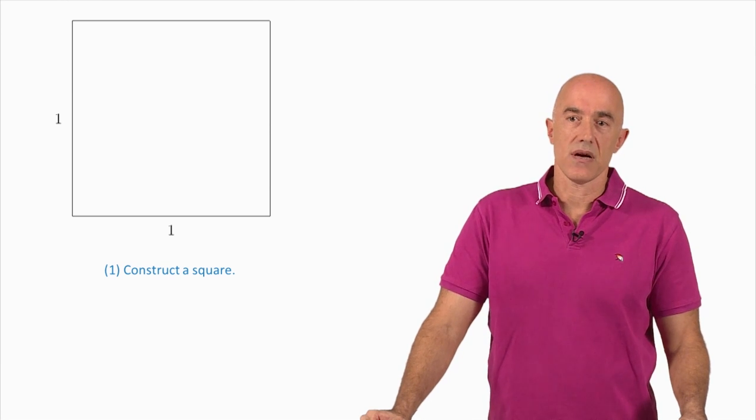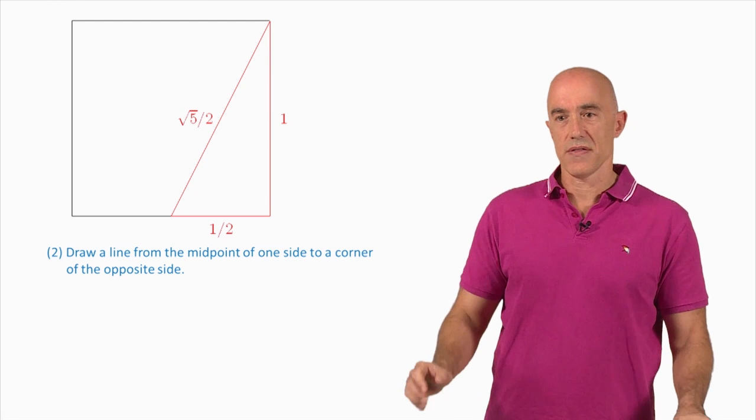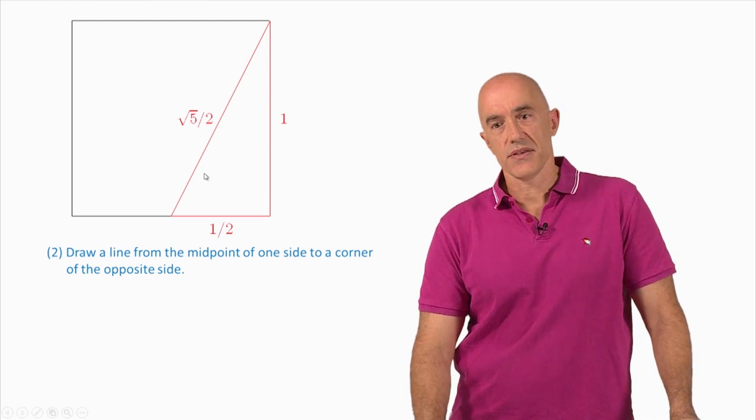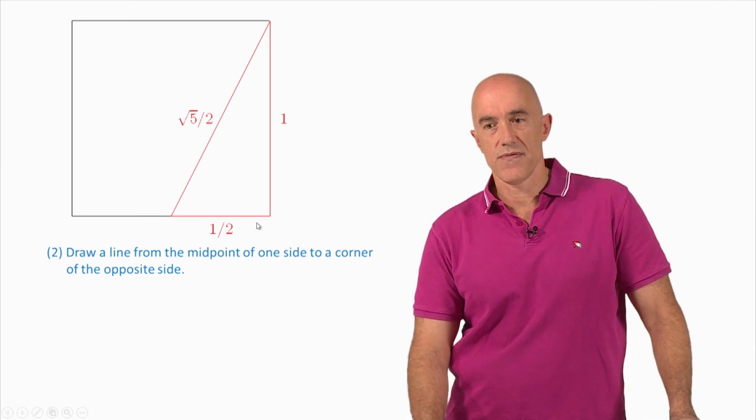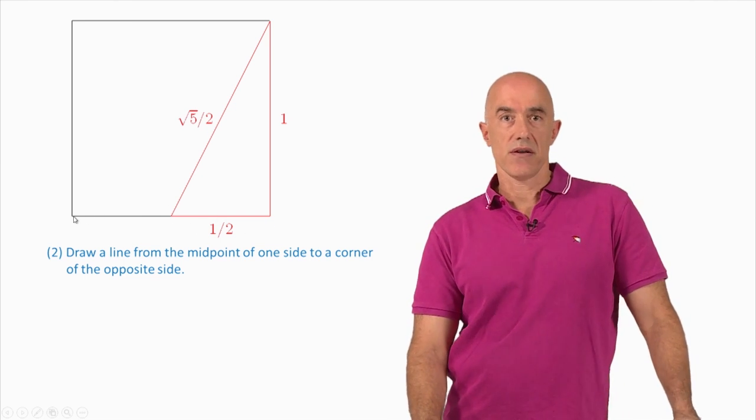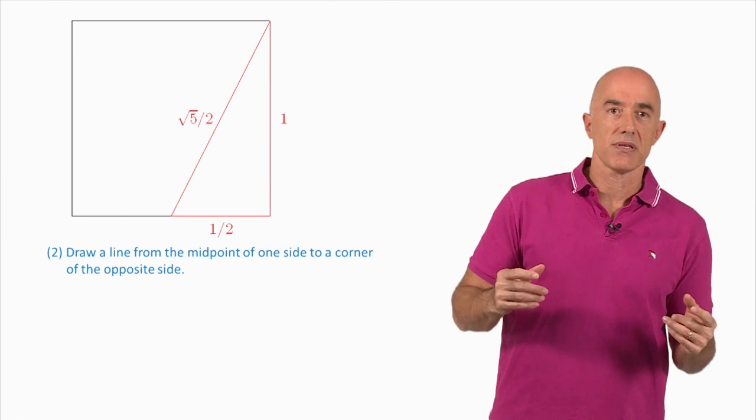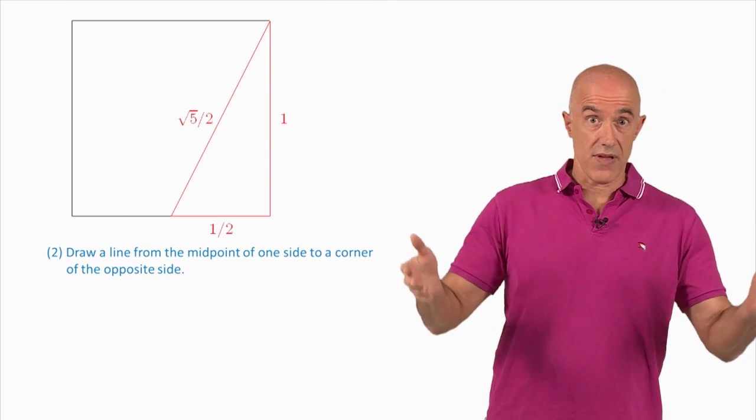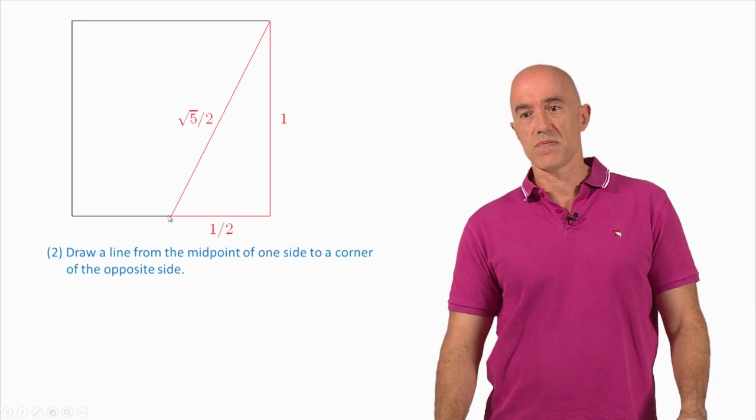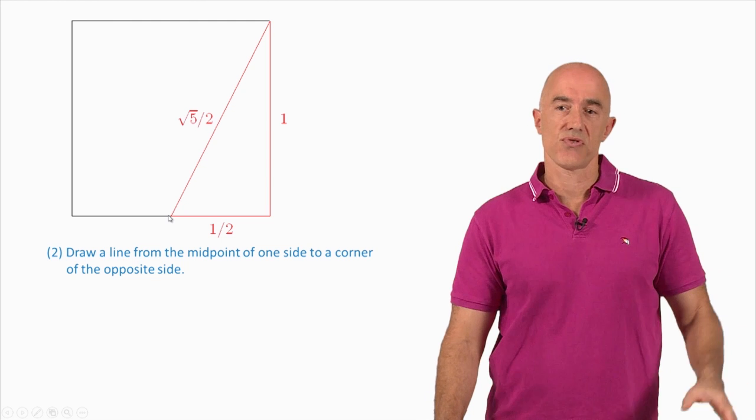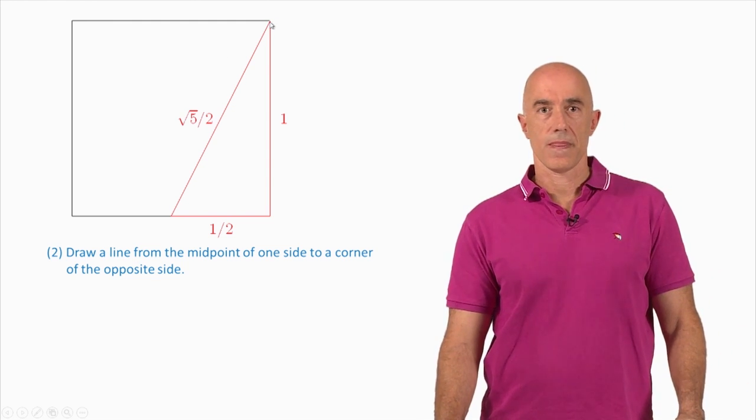So we put a one on the sides. Then the next step is to draw this red line here. This is from the midpoint. So first you have to find the midpoint of this bottom side of the square. There's a classical construction using the compass that allows you to find the midpoint of any line segment. I won't talk about that here. So we assume that you can find the midpoint. And then you can use your straight edge to draw the line to the opposite corner here.